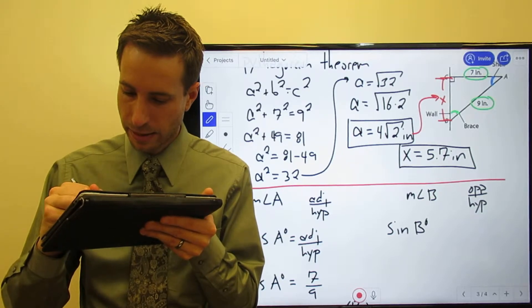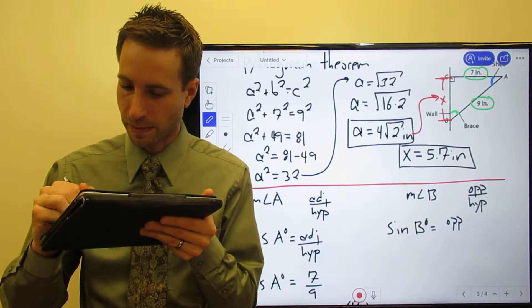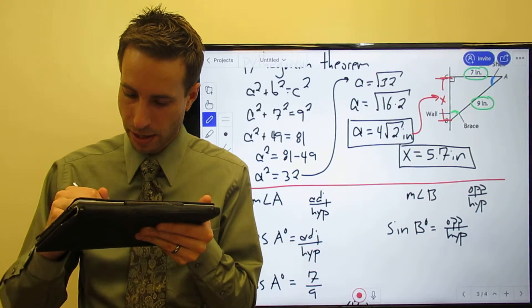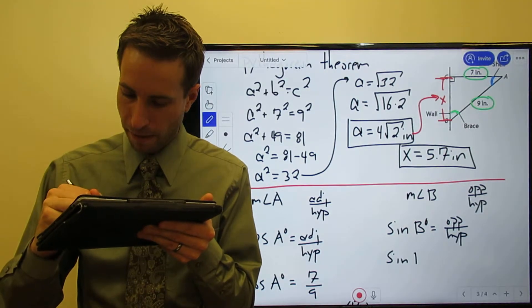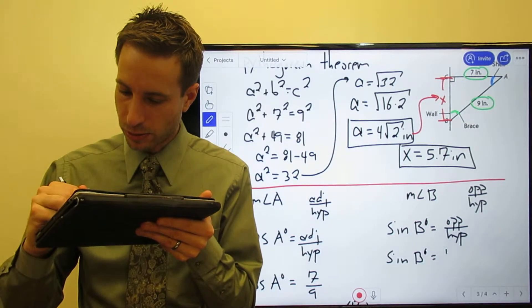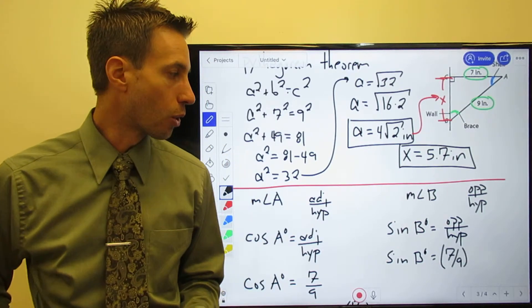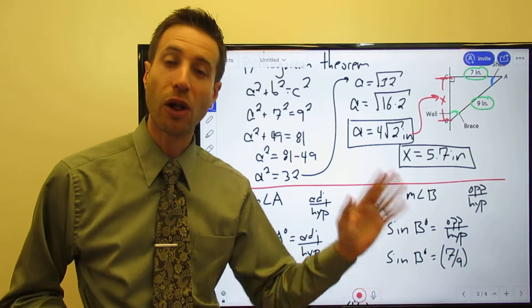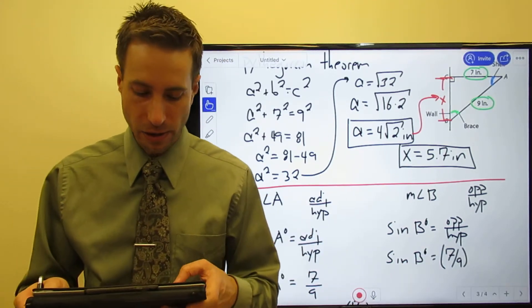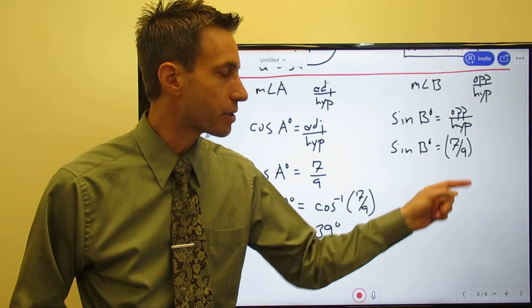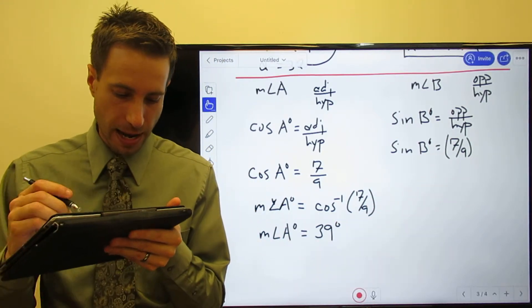I know the opposite side and I know the hypotenuse - oh yeah, that's right: sine of B is opposite over the hypotenuse. So the sine of B = 7/9. And again, in order to solve for the measure of the angle, I have to do the inverse sine of the ratio and take the inverse sine of 7/9.